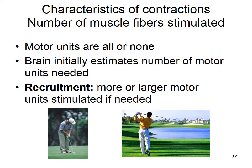Motor units are all-or-none — all muscle fibers innervated by a motor neuron contract when it fires. Your brain initially estimates how many motor units are needed based on previous experience. If you think a box has pillows but it actually has books, you must recruit more and larger motor units. Fine motor control like putting in golf requires fewer motor units; powerful movements like driving require many more. It takes practice to learn how many motor units to recruit.